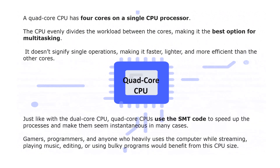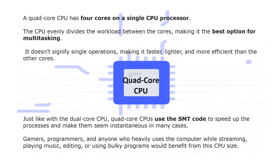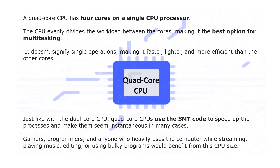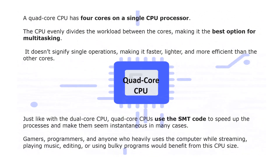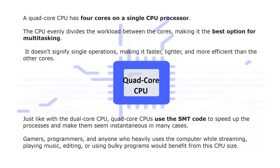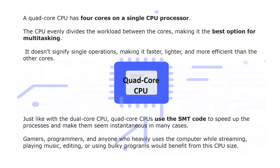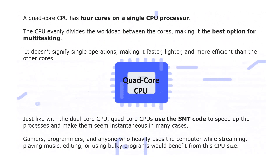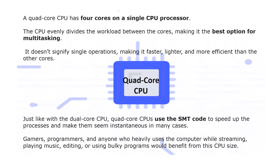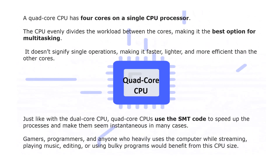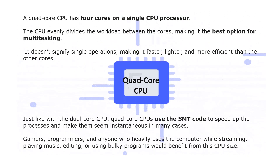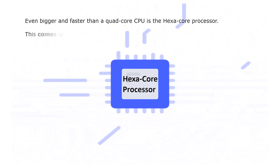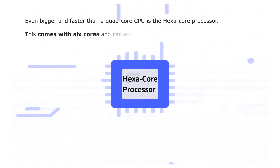Quad core CPUs are used by gamers, programmers, and anyone who heavily uses the computer. Those who stream, play music, edit, and use bulky programs would benefit from this series of CPU. Next is the hexa core processor, which is even bigger and faster than a quad core CPU.